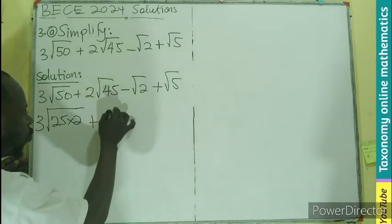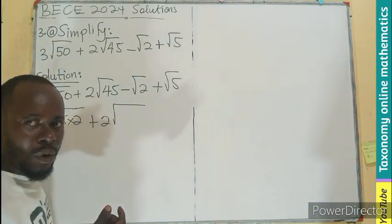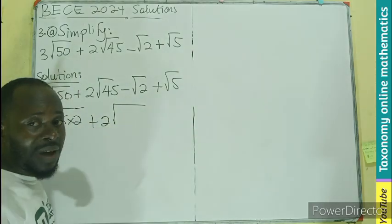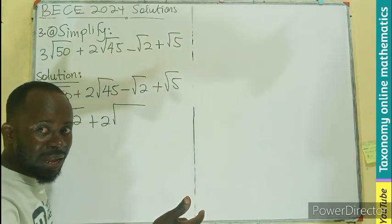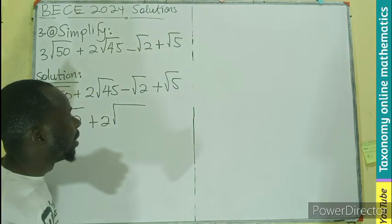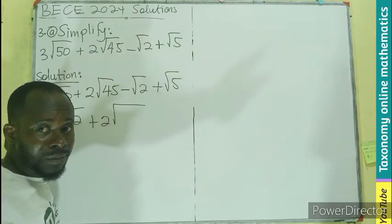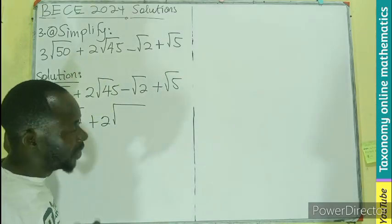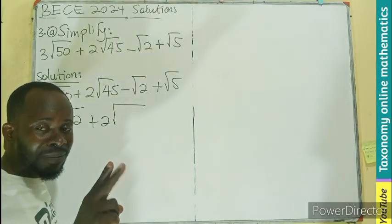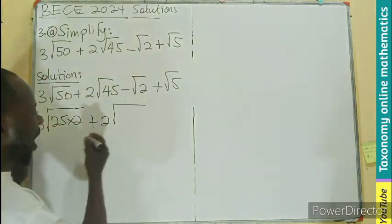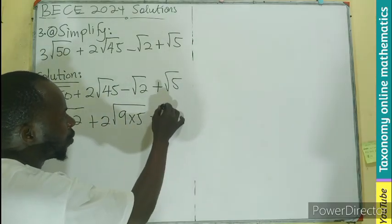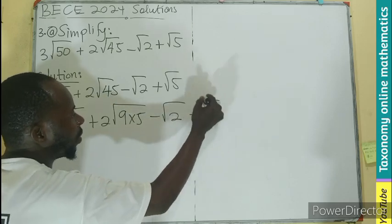Then I have the root of 45, which can also be reduced further. Using prime numbers: 2 cannot divide 45, so the next one is 3. 3 into 45 gives 15, and 15 is not a perfect square. So let's move to 5. 5 dividing 45 gives 9, and 9 is a perfect square. So we have 9 times 5, giving us 2 root of 9 times 5, minus root 2, plus root 5.